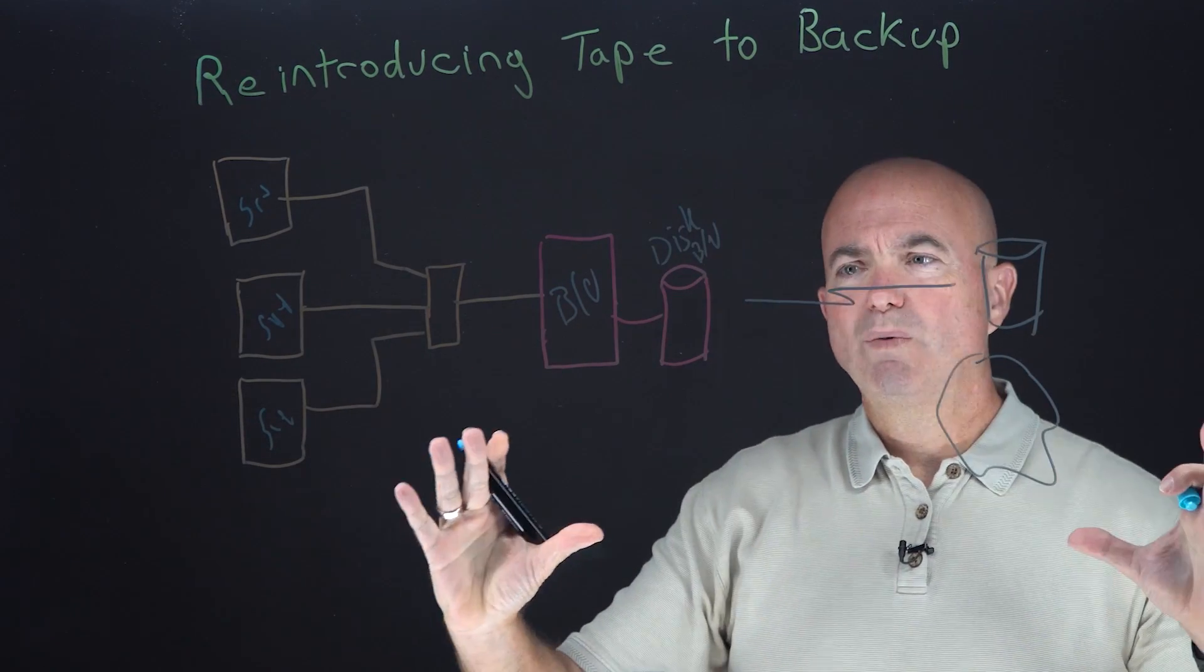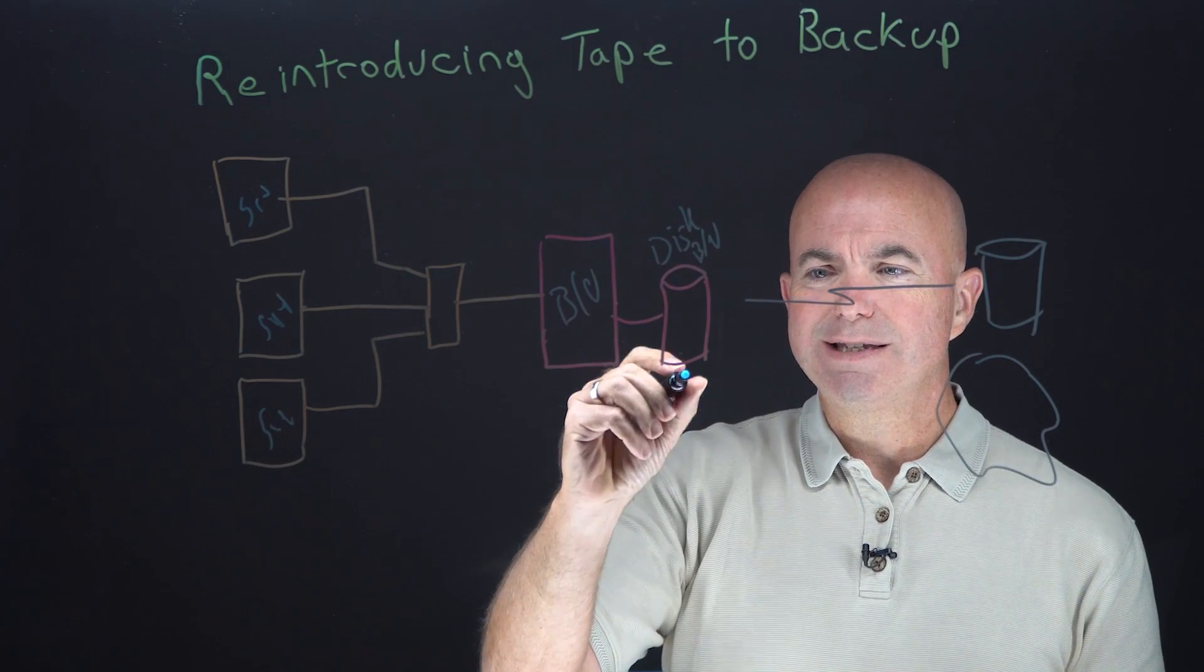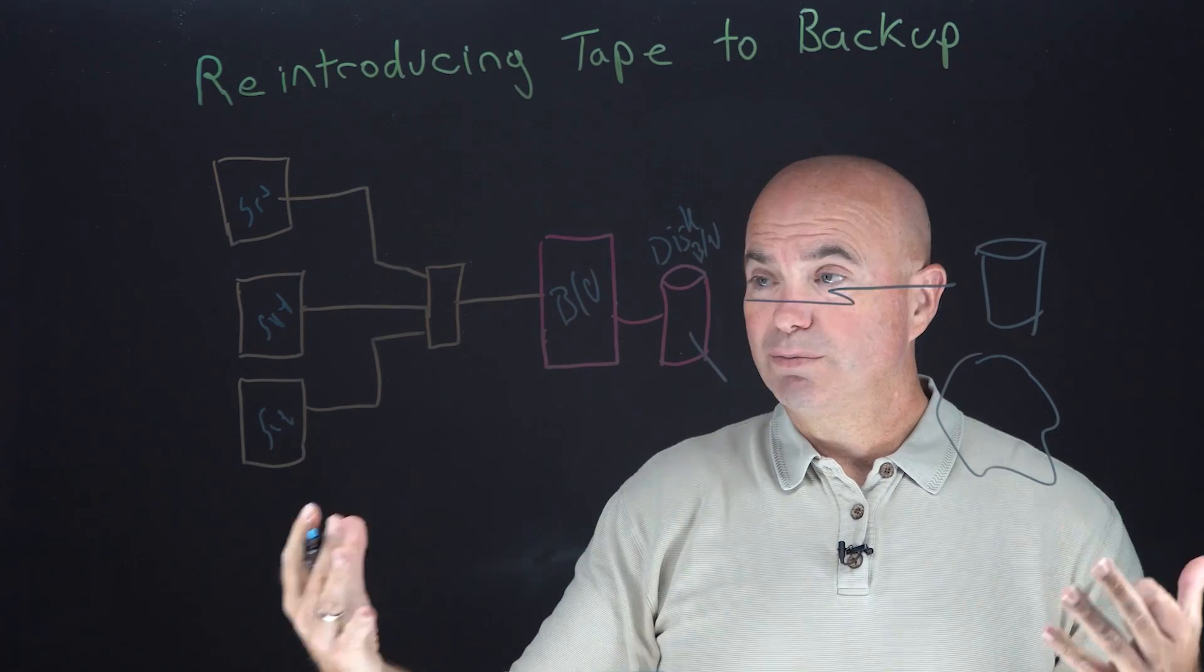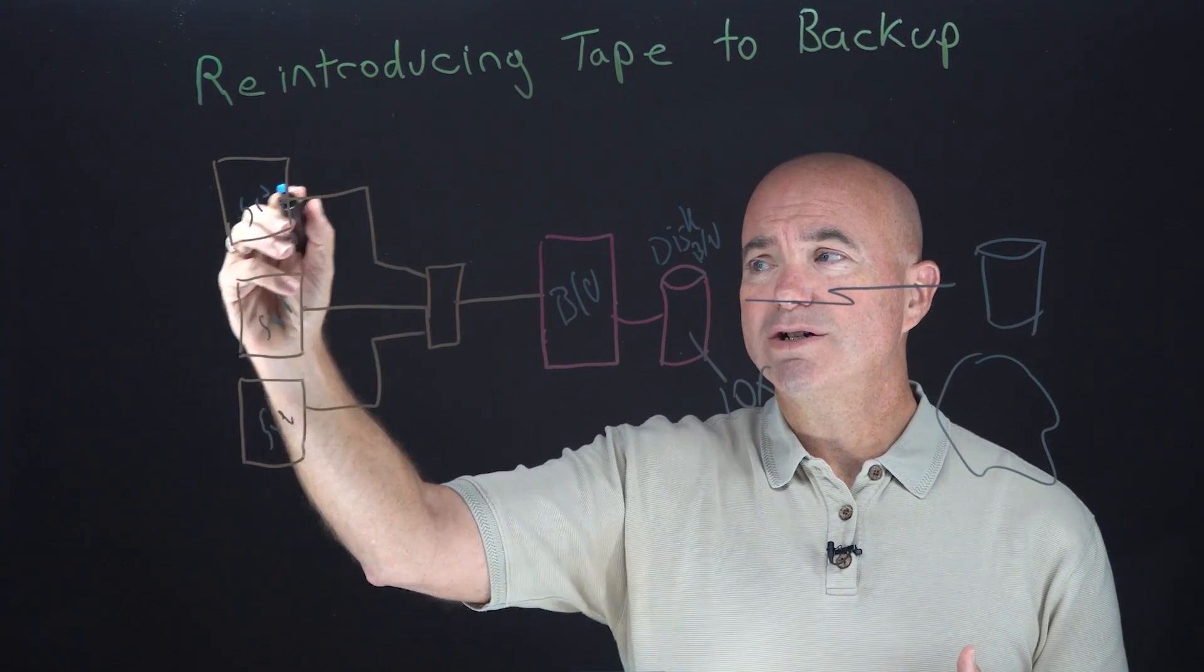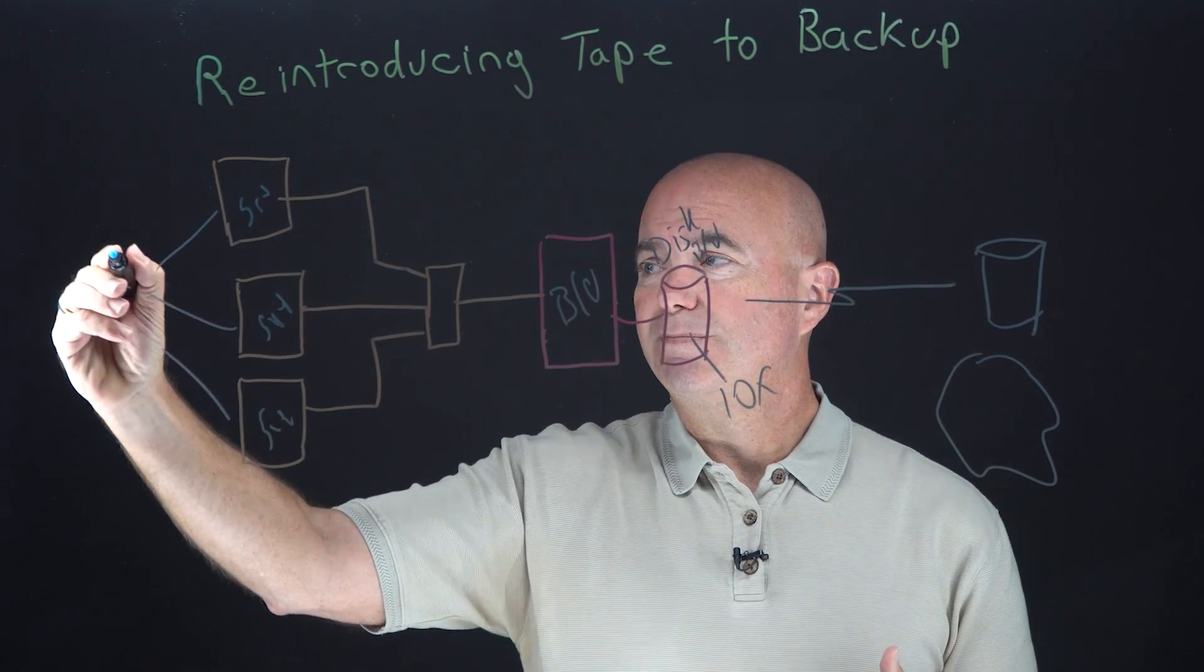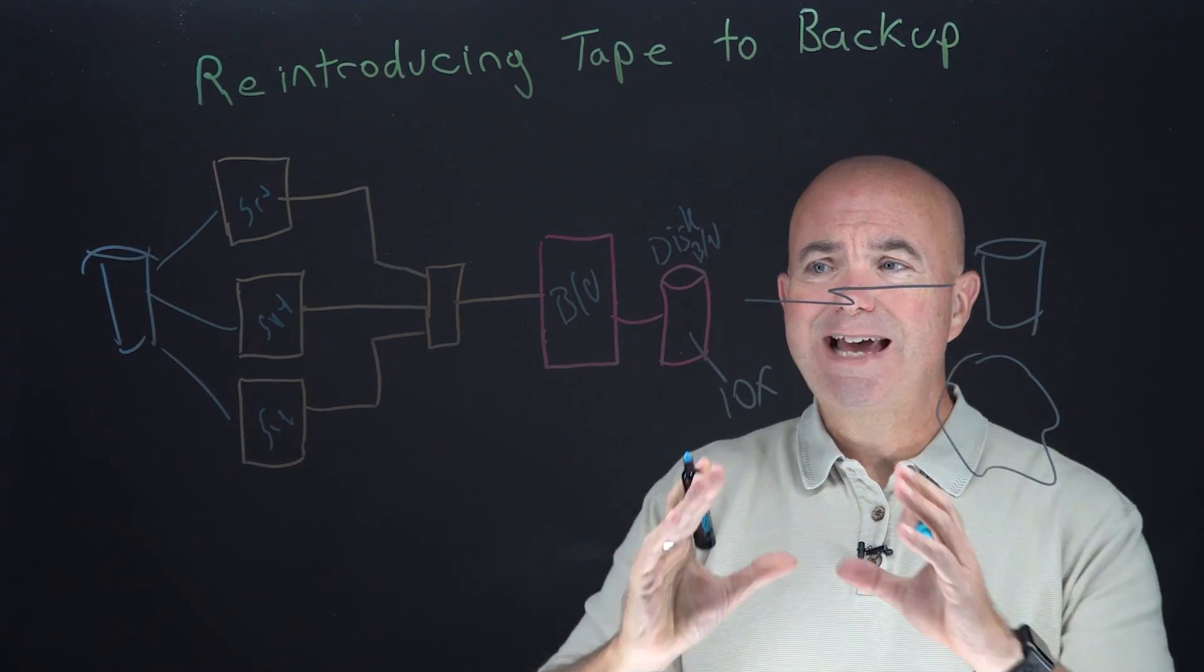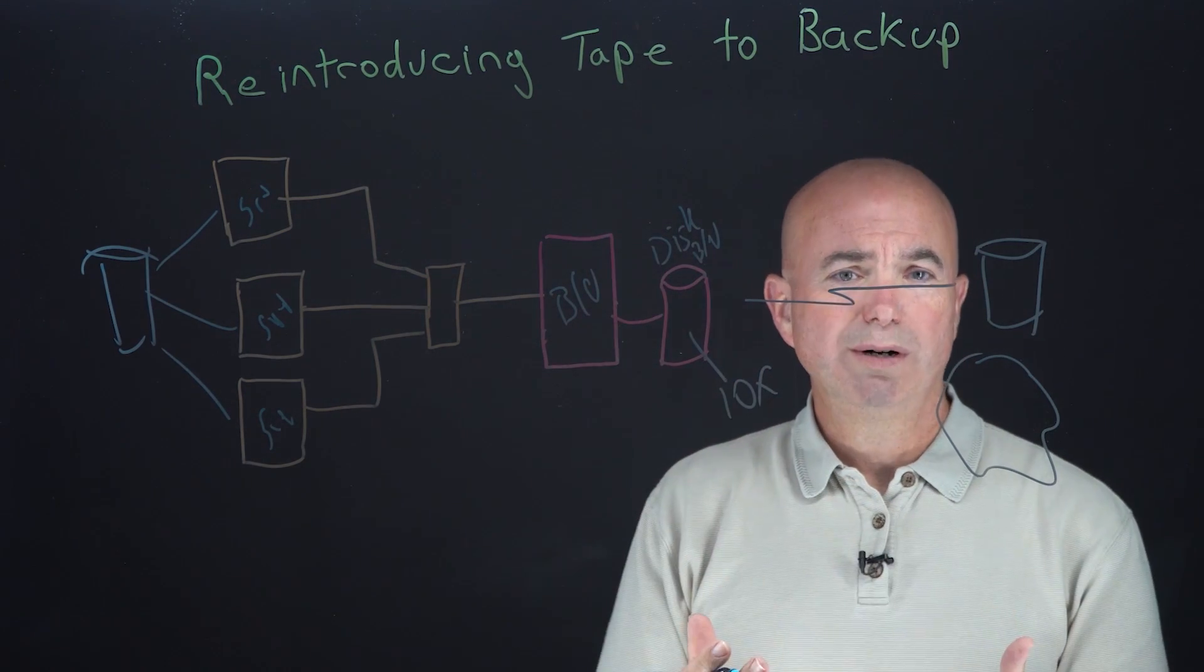But if you look at this, what we're seeing start to happen as a result is the size of the secondary storage repository is about 10x the total production storage that's out here. Now the ramification of that is you end up needing almost an entire data center just to store backup data.